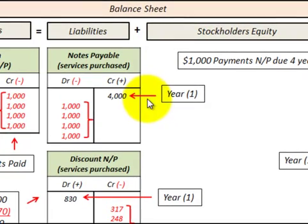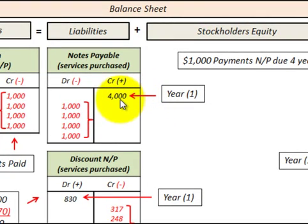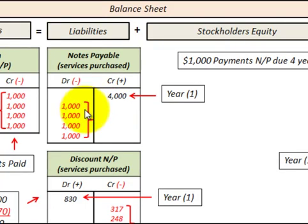Take the example here where we have a notes payable of $4,000 at the beginning of year one, and then each year we pay a $1,000 payment on the notes payable.